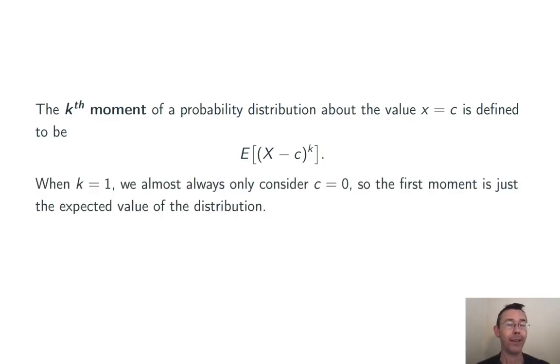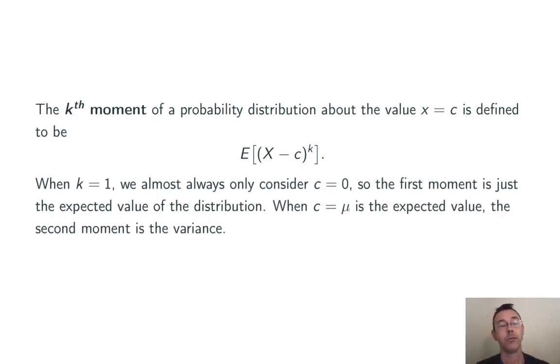When k equals 1 and c equals 0, we just get the expected value. The first central moment of a probability distribution is just the mean of that distribution. For higher values of k we typically take c to be that expected value. In other words, centering our moment around the expected value of the distribution. In that case when k equals 2 we're looking at an expression for variance.